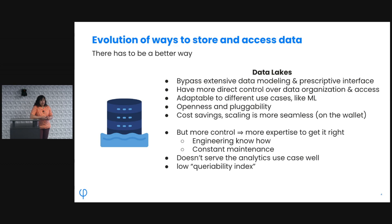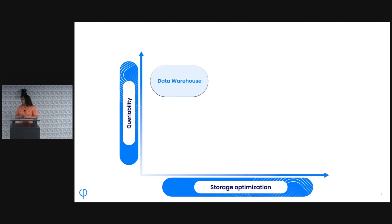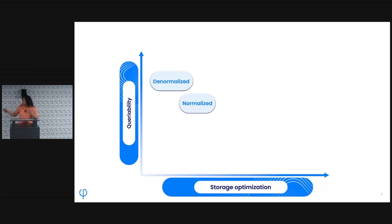One of the biggest pain points with data lakes is continuous maintenance. Also, a data lake optimized for ML serves that use case well but for analytics you still need another layer — that interface to run human queries against your data. I think of this as a query index: as you optimize storage, it's a trade-off against the queryability of your data. A warehouse is very queryable but not the most optimized for storage — that's why you unlock cost savings moving to the lake. Even within a warehouse, normalized data is more efficient to store but denormalized data is more queryable.